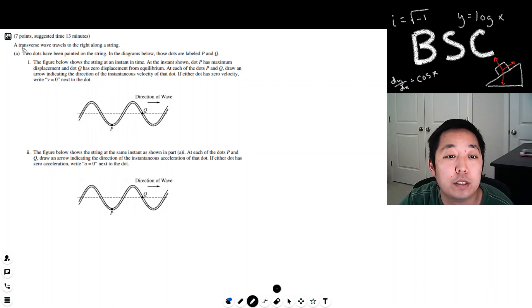So let's see, we have a transverse wave travels to the right along a string. Two dots have been painted on the string in the diagram below, labeled P and Q. The figure shows the string at an instant in time. At the instance shown, dot P has a maximum displacement and dot Q has zero displacement. So that means P is as far away from the center and Q is not far away from the center or zero distance from the center.